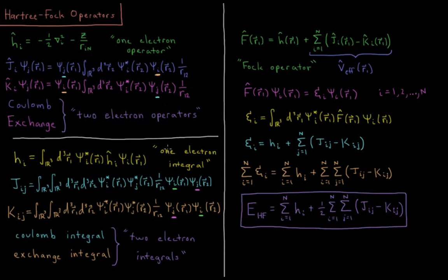We have h_i, our one-electron integral — the integral over all space for electron 1, multiplied by ψ*_i with h acting on ψ_i. Our Coulomb integral takes the Coulomb operator acting on ψ_j, multiplied by ψ*_j, then integrated over r1. The Coulomb integral is an integral over the coordinates of electron 1 and electron 2 — x1, y1, z1 and x2, y2, z2 — giving us ψ*_i ψ_i of electron 1 (charge density of electron 1) times ψ*_j ψ_j (charge density of electron 2), times 1/r12 — the distance between the charge densities of electron 1 and electron 2 — integrated over all possible locations in space.